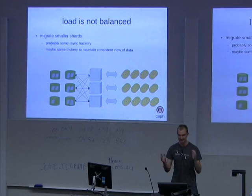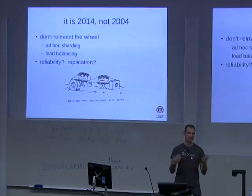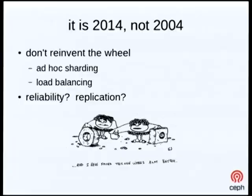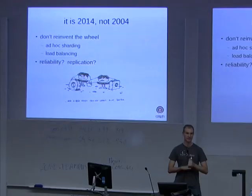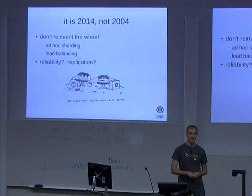In the end, if you realize it's actually 2014 and not 2004, you're essentially reinventing the wheel yet again. You're re-implementing this ad hoc sharding approach where you have to break your dataset into pieces, distribute those across servers, and balance that load. We haven't even started looking at the issues of reliability — whether those servers fail and whether you need to replicate across them. You really want to avoid reinventing the wheel, and in particular if you're the person writing the web application, you don't want to have to think about any of these details.